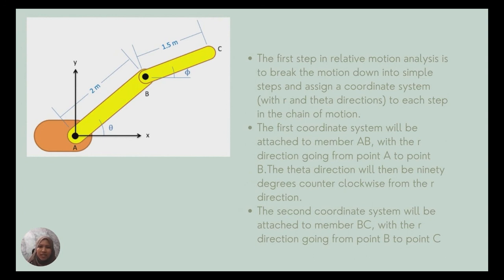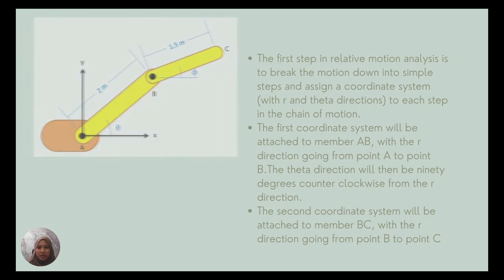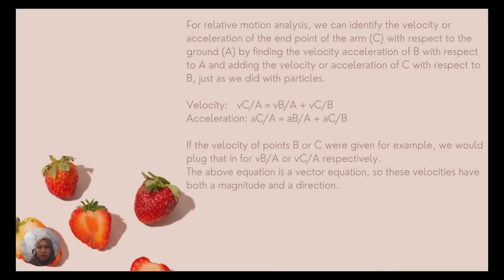The first step in relative motion analysis is to break the motion down into simple steps and assign a coordinate system to each step. This is the formula for velocity and acceleration. The above equations are vector equations, so these velocities have both magnitude and direction.